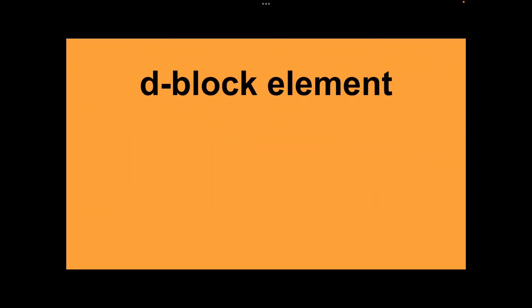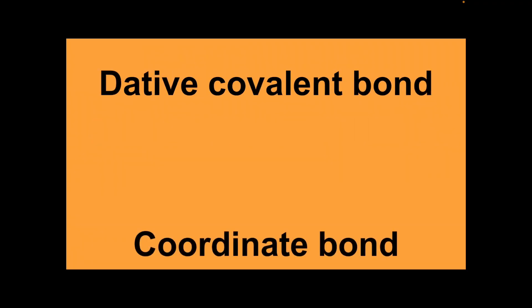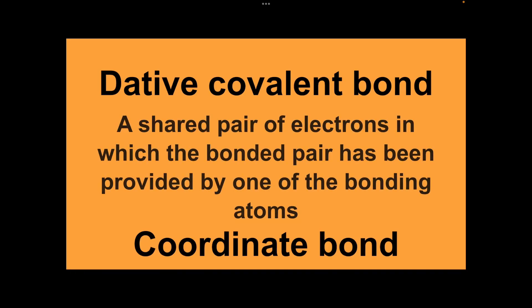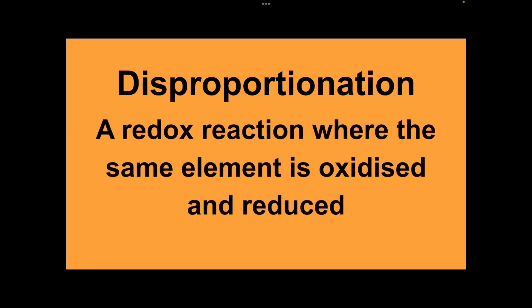D-block element: an atom that has its highest energy electron in a D sub-shell. Now, if it asks you for S, P or F, you literally just change the letter of the sub-shell, obviously. Dative covalent bond or coordinate bond: shared pair of electrons in which the bonded pair has been provided by one of the bonding atoms. Disproportionation: a redox reaction where the same element is oxidized and reduced.